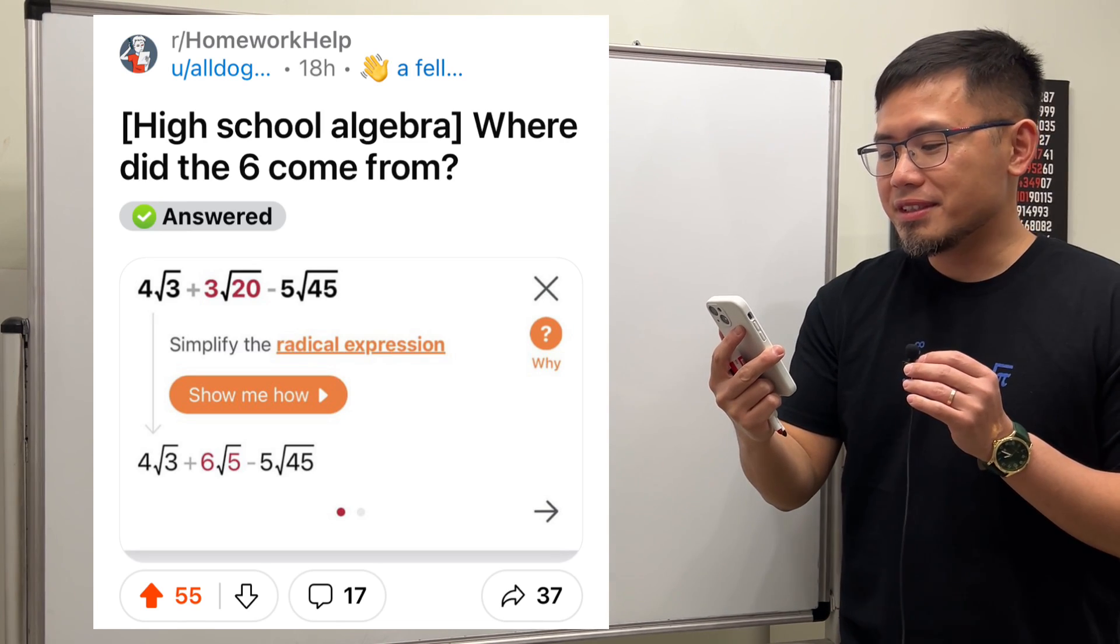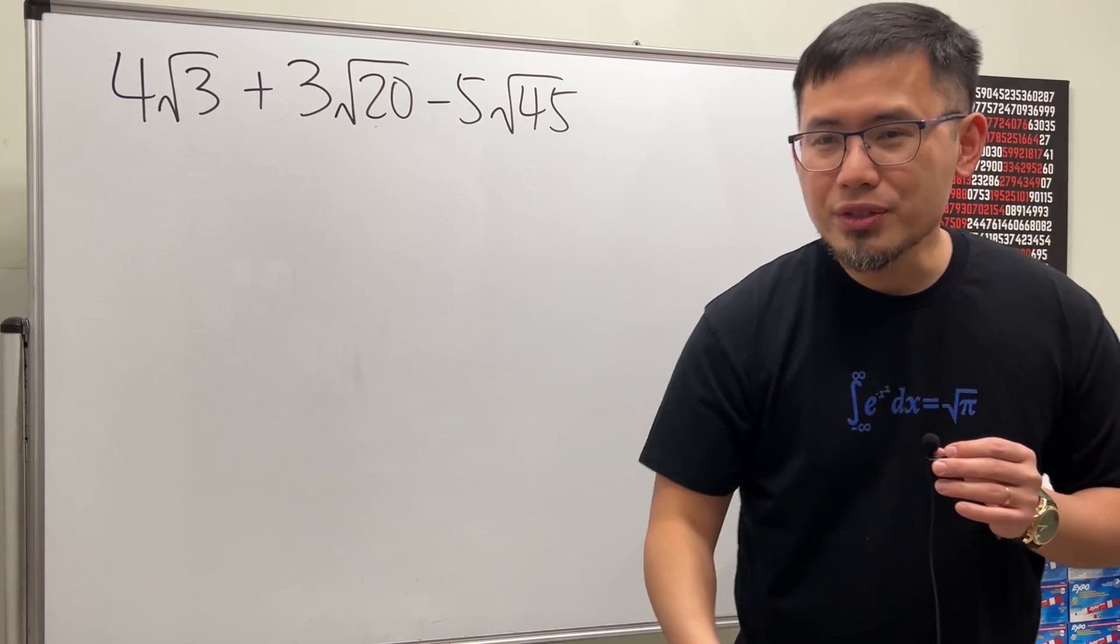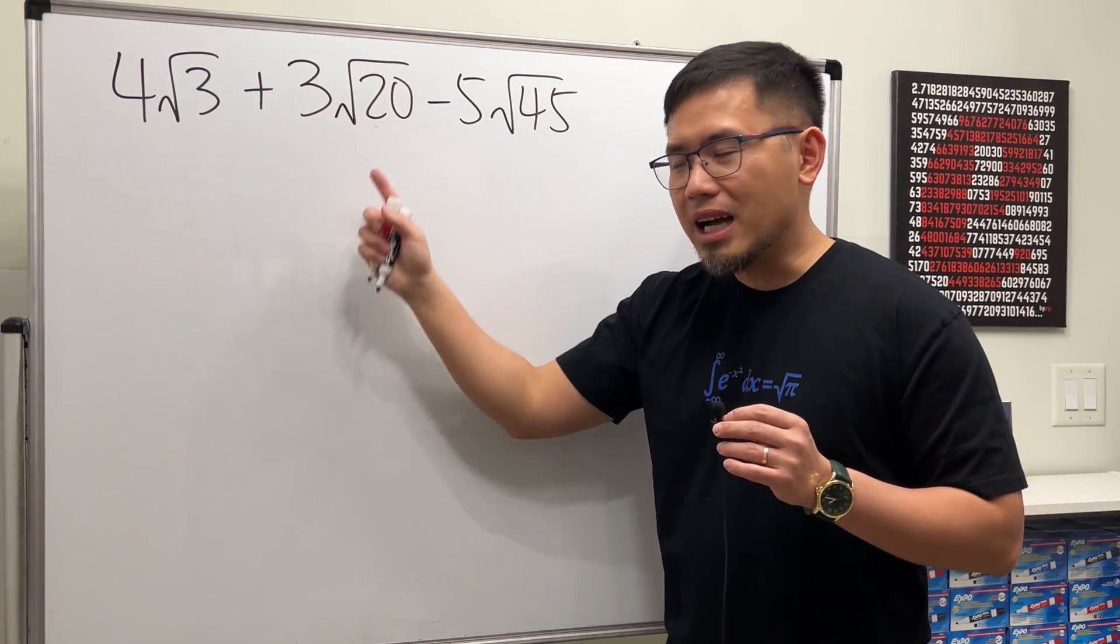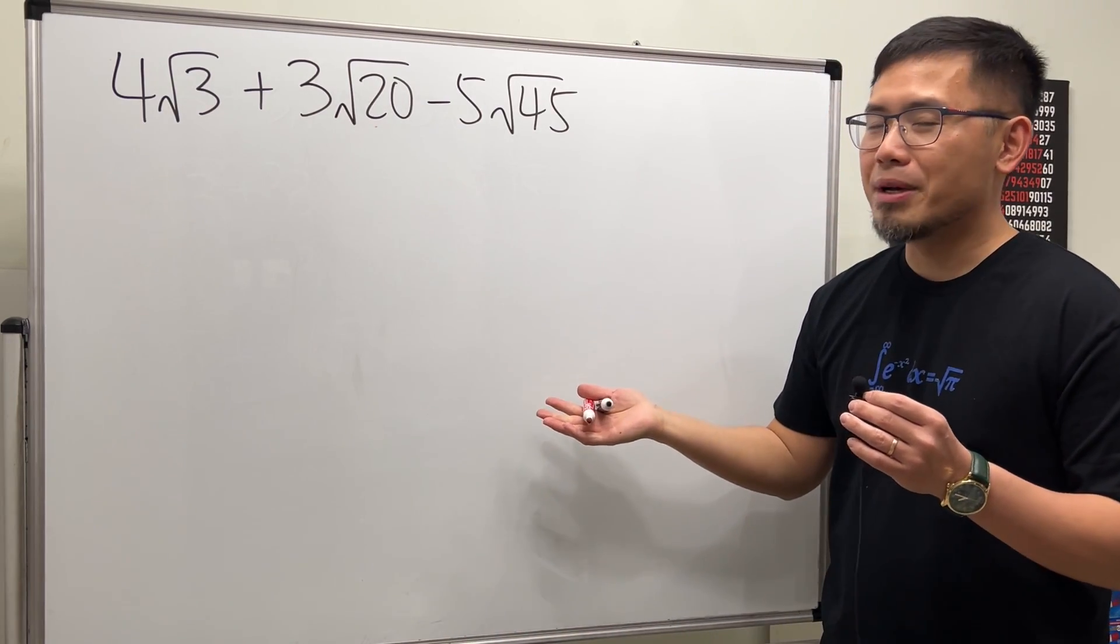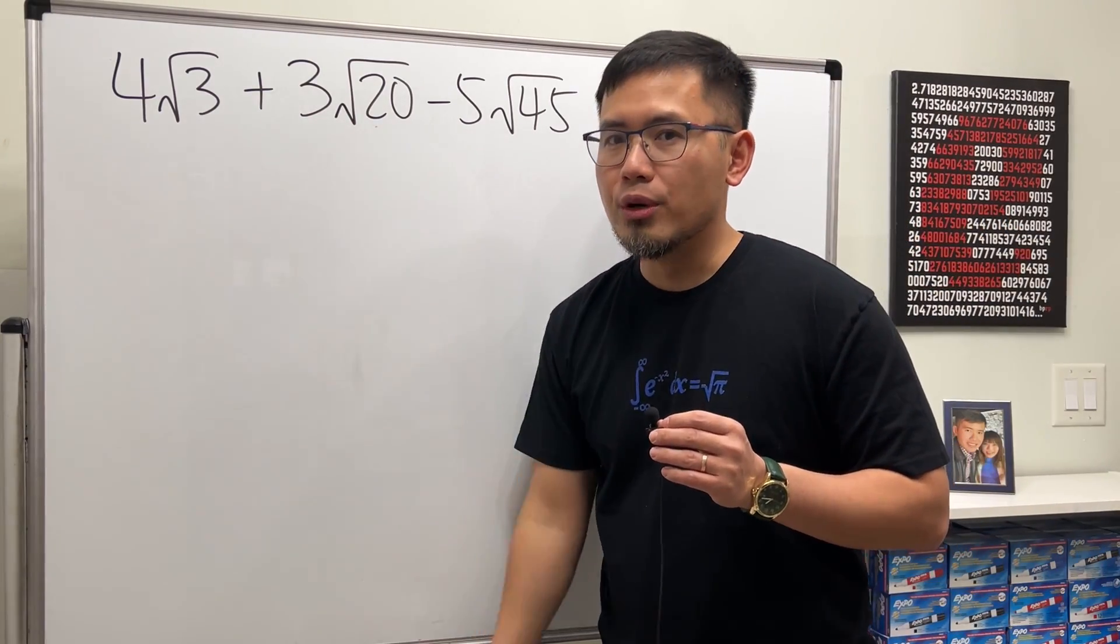High square algebra, where did the 6 come from? Let's have a look. The question is originally here. We have 3√20, but somehow we end up with a 6 on the outside. So how did that happen?